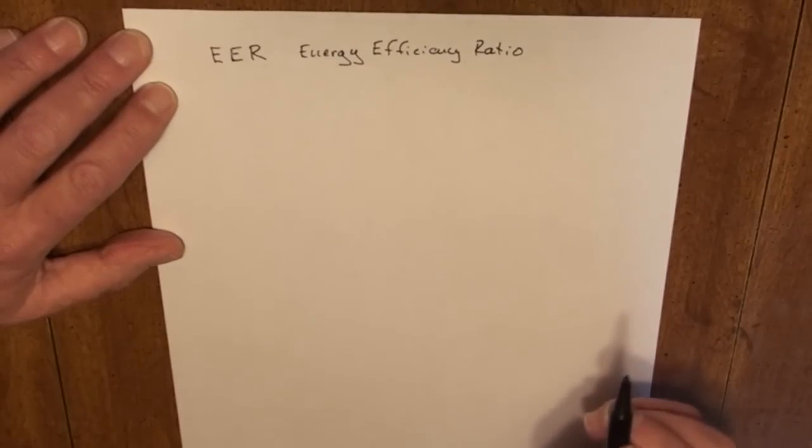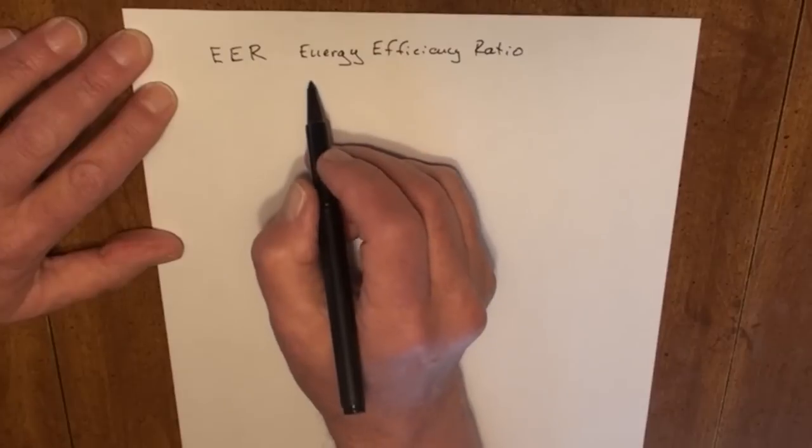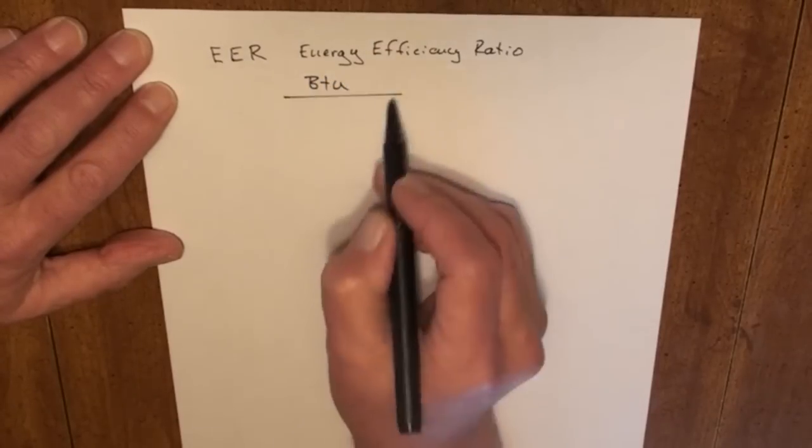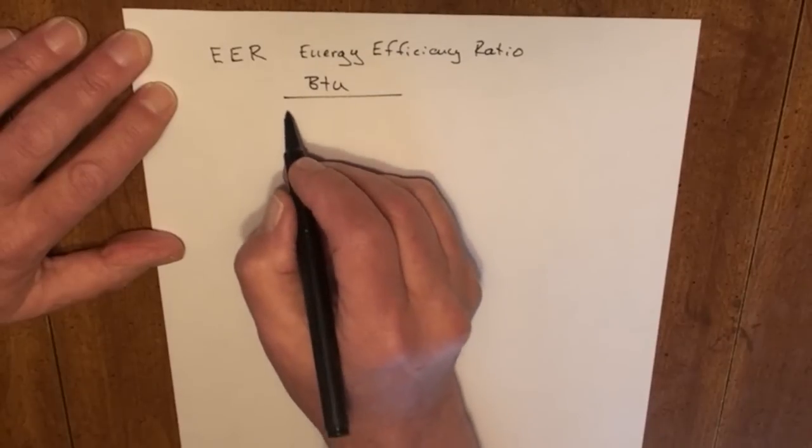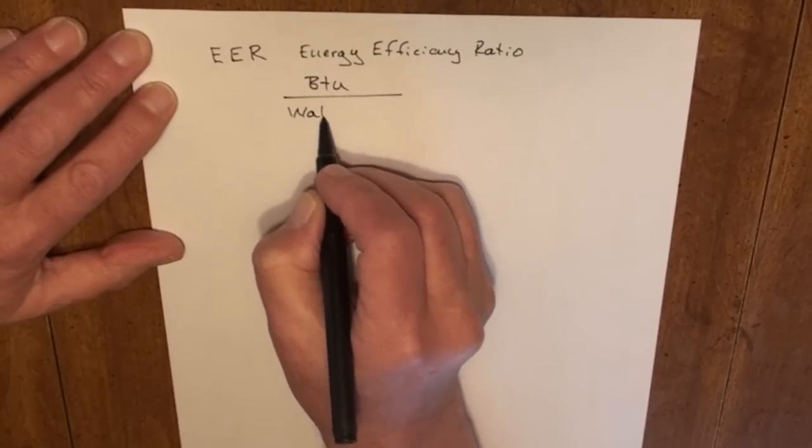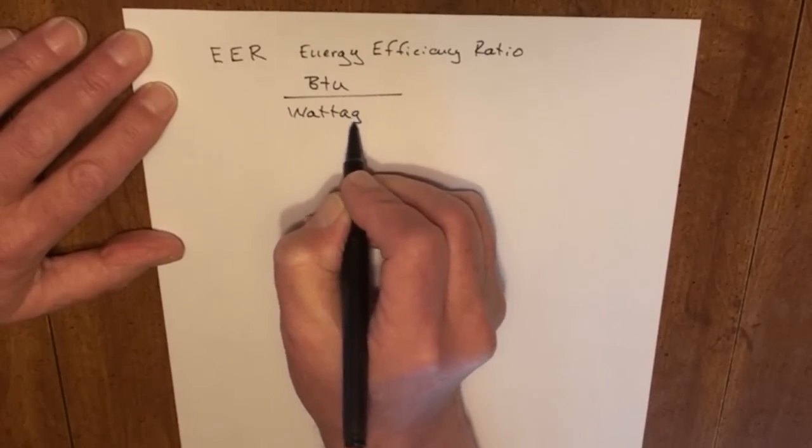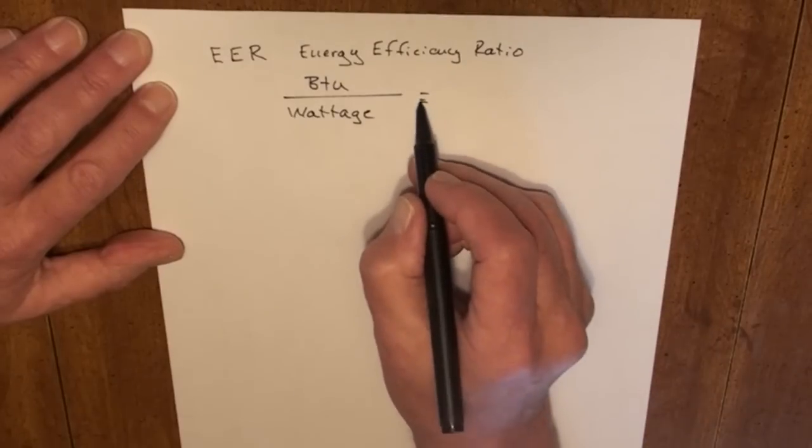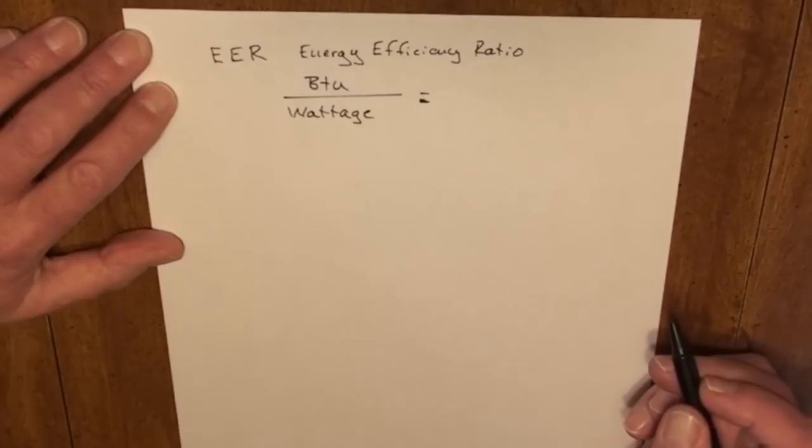Now, the energy efficiency ratio was something that was pretty straightforward. It was BTU consumption divided by the wattage, and that would equal our energy efficiency ratio.